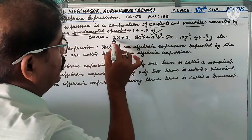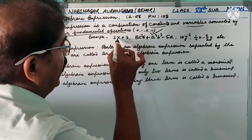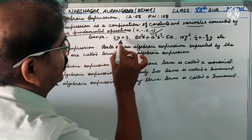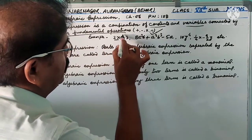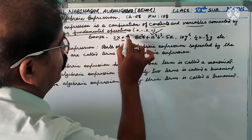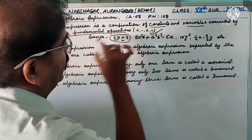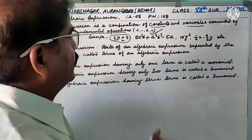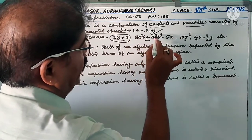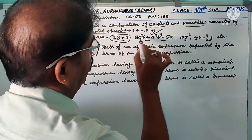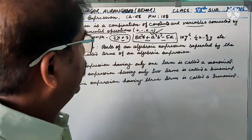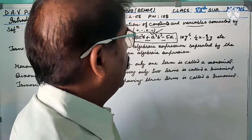For example, this is a numerical expression; this is a constant and this is a variable. So 2x + 3 — here the plus sign connects 2x and 3 — and 2x + 3 is known as an algebraic expression. Similarly, 8a²b + a³b³ − 5a is also an algebraic expression.